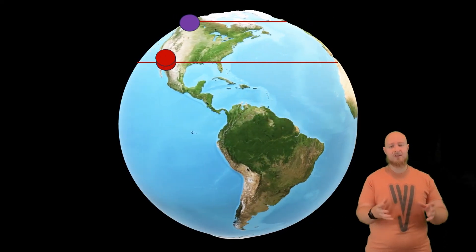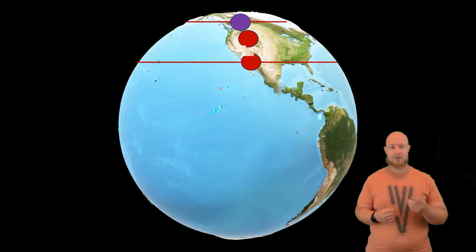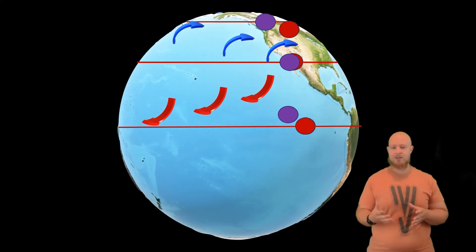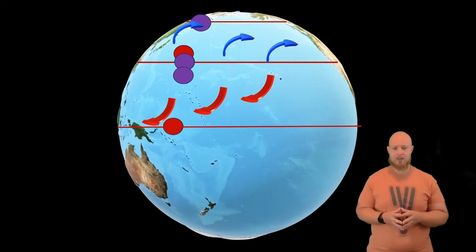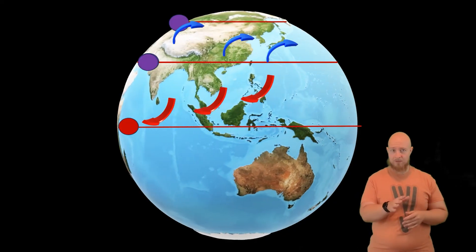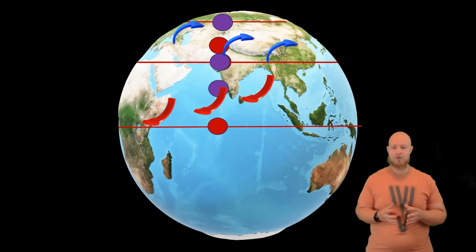This is the Coriolis force. In a rotating system like our planet, a mass will experience a force perpendicular to the direction of travel. This results in masses being deflected to the right, relative to their direction of movement in the northern hemisphere.